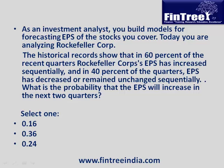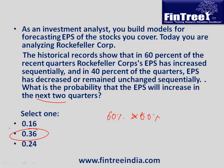As an investment analyst, you build models for forecasting EPS of stocks you cover. Today you are analyzing Rockefeller Corp. Historical records show that in 60% of recent quarters, Rockefeller's EPS increased sequentially, and in 40% of quarters EPS decreased or remained unchanged. What is the probability that EPS will increase in the next two quarters? You want it to increase in the first quarter and increase again — so 60% × 60% = 36%.